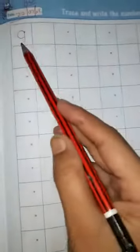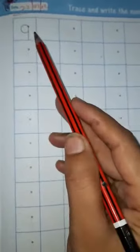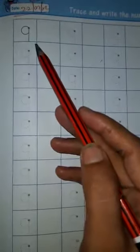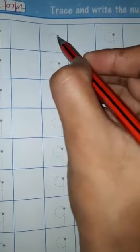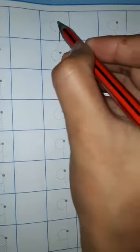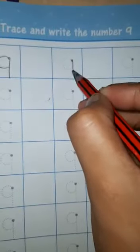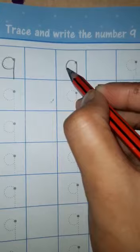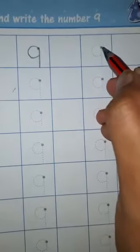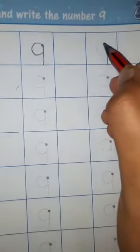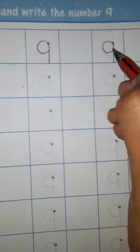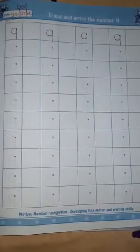Now look here, here is number nine. You have to trace number nine like this. Number nine. This is number nine. This is number nine. So like this, you have to complete this page.